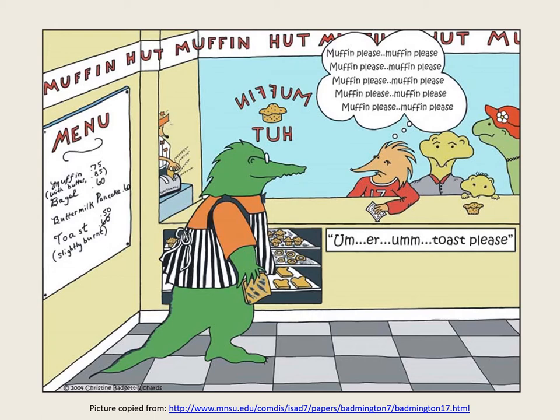In the cartoon, the hedgehog obviously really wants to ask for a muffin — he doesn't really want toast — but he's worried that he might not be able to say the word 'muffin' well enough for the crocodile to understand him. His strong desire to say 'muffin' as clearly as possible means the release threshold for that word has become set at too high a level, so his brain has difficulty releasing it for motor execution. In contrast, the release threshold for 'toast' is set at a lower level because he doesn't really care about toast — so ironically, 'toast' can be released for motor execution more easily than 'muffin'.